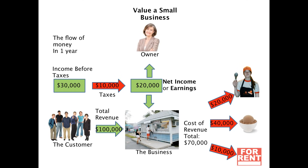Where we left off in Lesson 2 was that we had a small business owner whose name was Nancy. You can see her there at the top. She had this small ice cream business. The ice cream business had $100,000 in revenue, and after all the different costs, she eventually ended up with $20,000 of net income or earnings. Nancy had two options: she could keep that money for herself, or she could put the money back into the business.